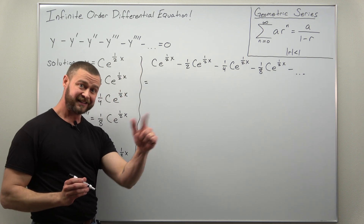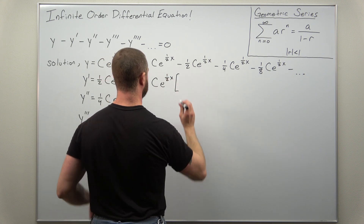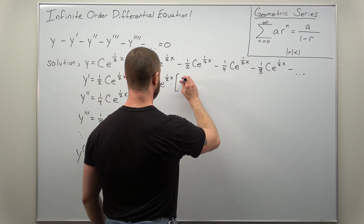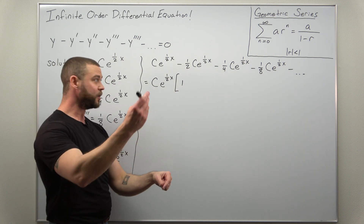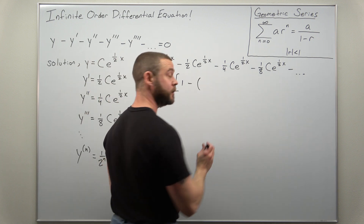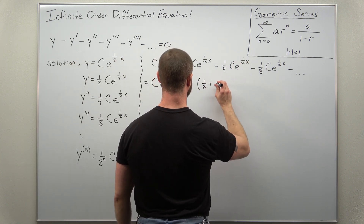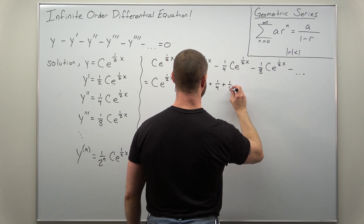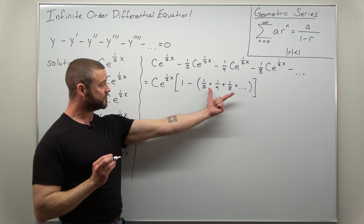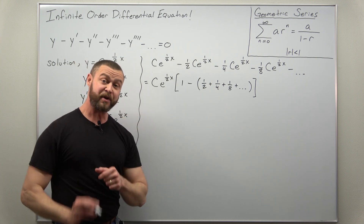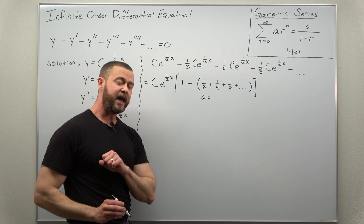So let's factor out c times e to the one half x from everything. The first term leaves you with one. All remaining terms are negative, so factoring out a negative we can write them as minus the quantity one half plus one fourth plus one eighth, and so on. In order to show this is a solution, we recognize that what we have in the parentheses is a simple geometric series.